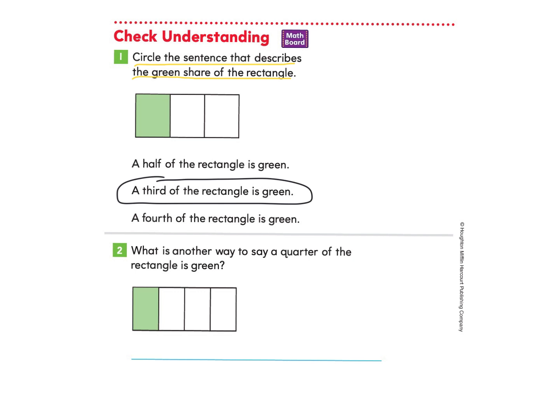Let's look at part two: What is another way to say a quarter of the rectangle is green? Another way to say that is a fourth of the rectangle is green. Nice work today. If you would like to go back and watch this video, you may do so and you can pause along the way anytime as needed.